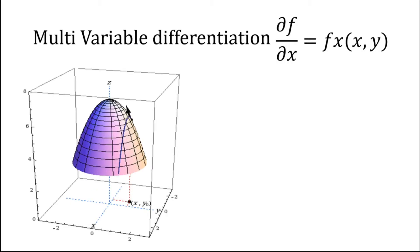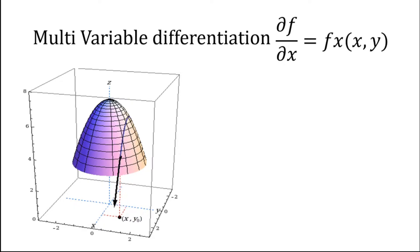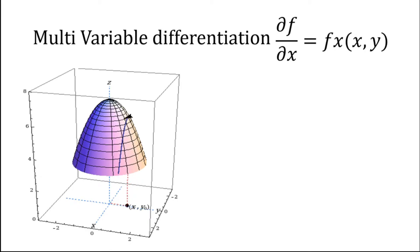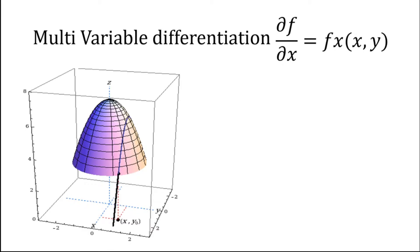Let's say you want to find the tangent in the direction of the x-axis. What you need to do is fix a plane where y is constant. You can slice the curve by choosing different values of y — let's say you choose y equal to y-naught — so you slice the plane at y-naught and get a curve where y is fixed. You can then choose any point on that curve and find out how x is changing at that particular point.